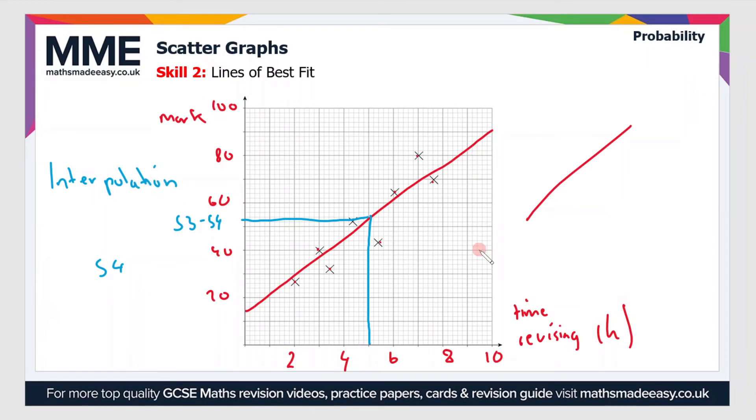Whereas if we've carried out the estimation outside of the range of the given data, so for instance if we've gone to nine hours revising and try to estimate from here, this would be outside of the range of the given data, so it's known as an extrapolation. An interpolation is generally quite reliable because it's inside the data or the range of data that's given, and an extrapolation is generally less reliable because you can't predict if or when a correlation might suddenly change.